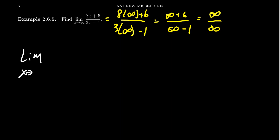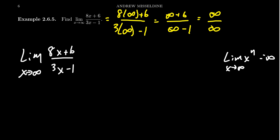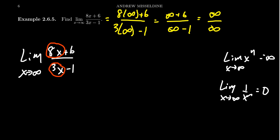So one thing we can do when it comes to these types of limits as x approaches infinity, when you have a rational function, is to flatten the function. When you take the limit of a monomial as x goes to infinity, you end up with infinity, which isn't exactly useful. On the other hand, if you take the limit as x approaches infinity of a reciprocal function — 1 over x to the n — you're going to get 0, which is a lot more beneficial. So identify the leading term on top and bottom, and kill off the smaller of the leading terms. Here, 8x and 3x are balanced — the leading terms on top and bottom are the same degree, both x to the first. So we multiply the top and bottom by 1 over x.